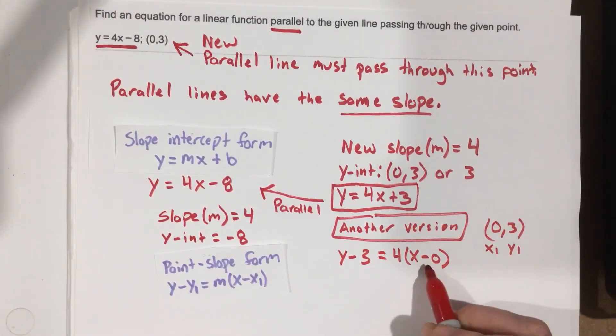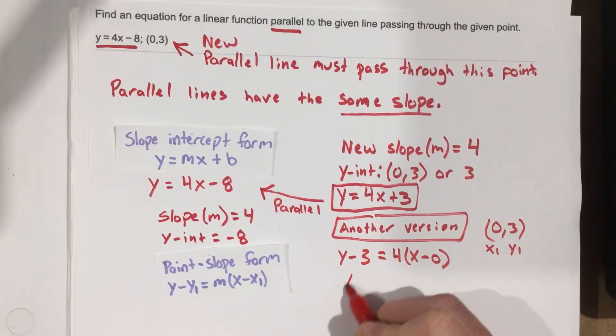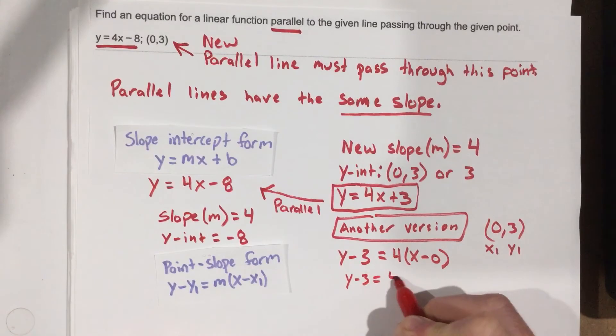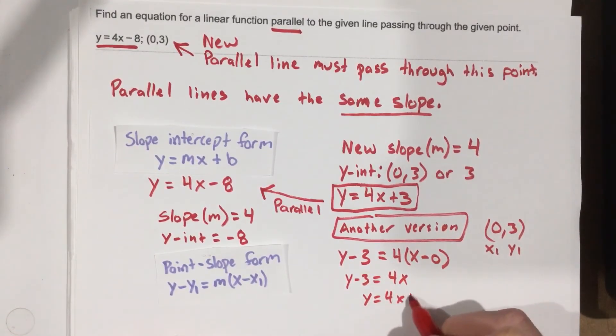Okay, when we take x minus 0, we just get x, right? This is insignificant. So we end up with y minus 3 equals 4x. Add the 3 over, and you'll see we end up with y equals 4x plus 3, which is the same answer.